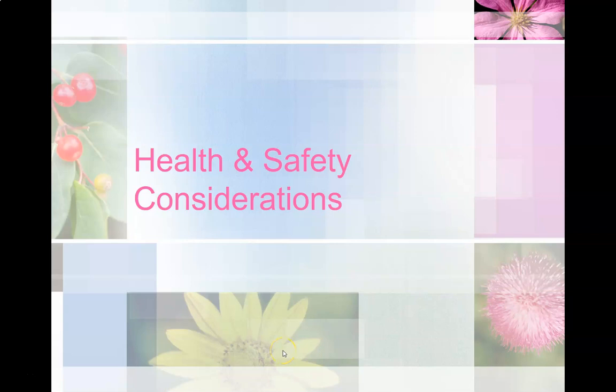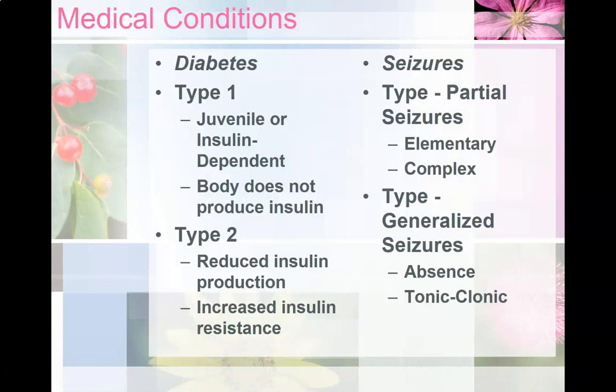This presentation will cover some of the health and safety considerations addressed in your book. There are many considerations you will experience throughout your career, but here are some of the common ones. Diabetes is a very common condition related to the body's inability to regulate body glucose levels. Hyperglycemia refers to an elevated level of blood glucose, and hypoglycemia refers to reduced blood glucose levels. There are two types of diabetes.